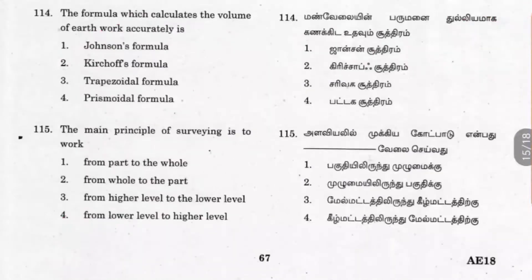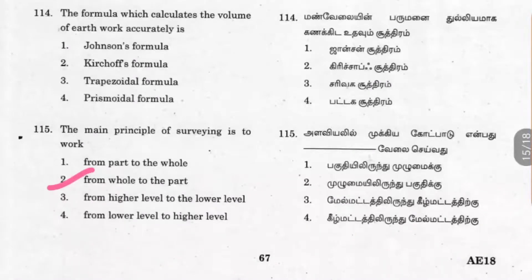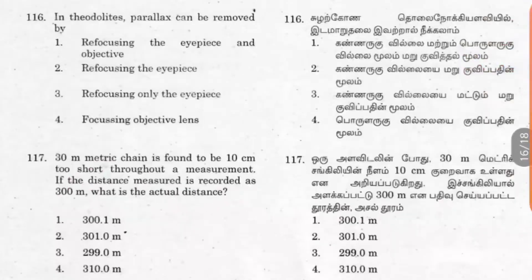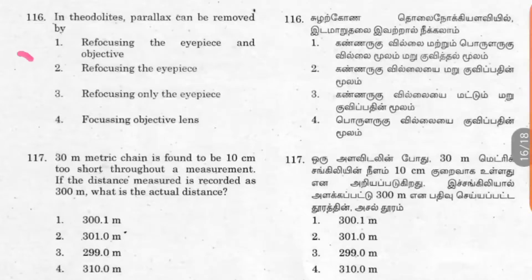Question 115: The main principle of surveying is to work from whole to part. This ensures that errors are minimized. Question 116: In theodolites, parallax can be removed by refocusing the eyepiece and the objective. So option 1 is correct.